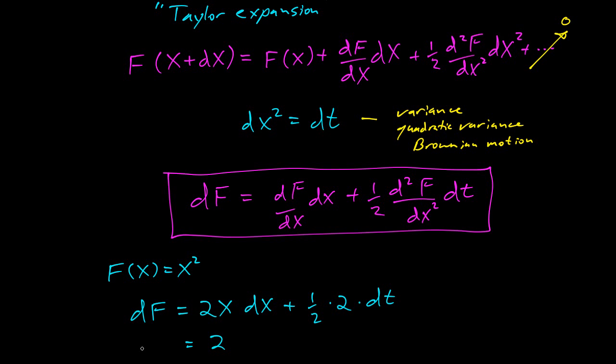So in other words, dF = 2x dx + dt. So there's our example. It worked out. We can do calculations now. So Ito's lemma is pretty neat. Good to know.